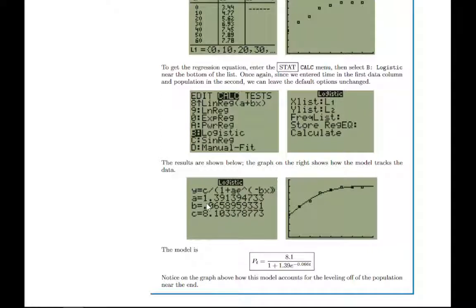Notice it labels them slightly differently, A and B and C, instead of the M and the P0 and so on. But it's the same kind of thing, you can fill in that model, and then you can make predictions once you have that model set.